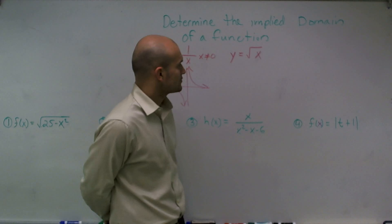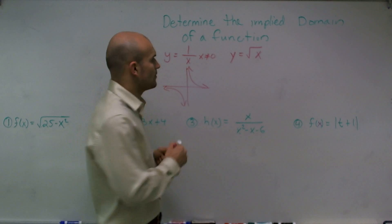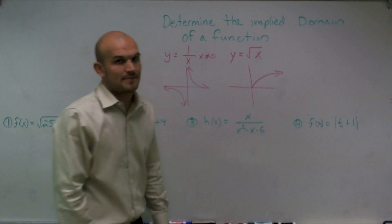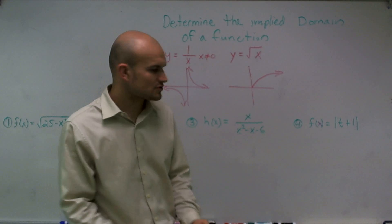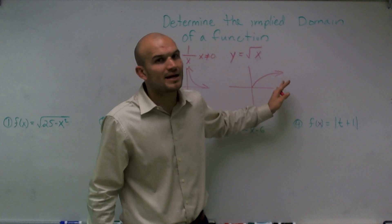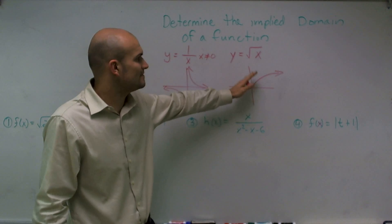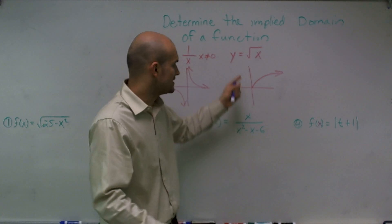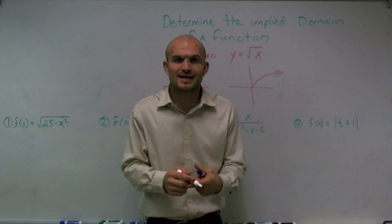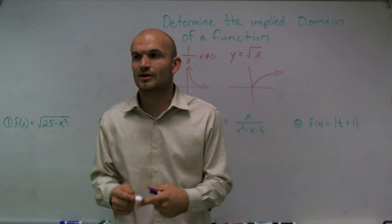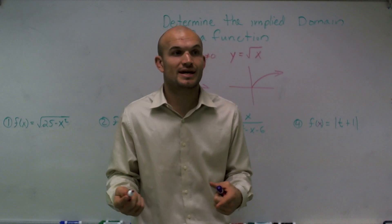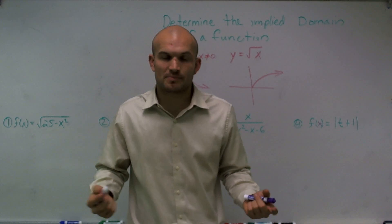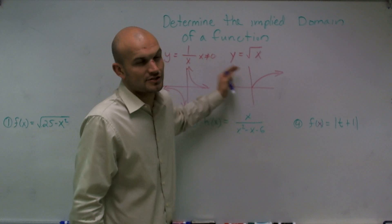The last one is y equals the square root of x. The graph for y equals the square root of x shows that I can take the square root of all positive values of x, but I cannot take the square root of any negative values of x. For instance, the negative square root of 4 — you can't find two numbers that multiply to give you negative 4, because a positive times a positive gives you a positive, and a negative times a negative gives you a positive. So therefore, we cannot take the square root of a negative number.